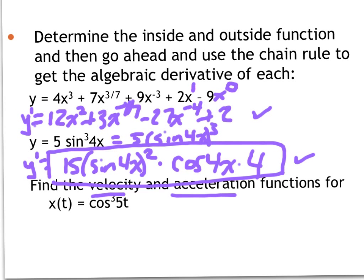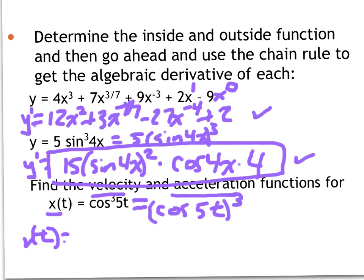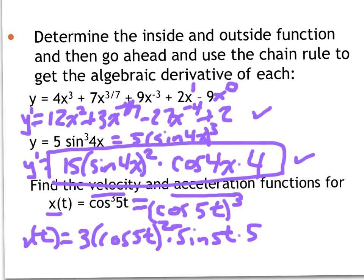The next problem is to remind you how to find velocity and acceleration for a given function. x of t is a distance function, so velocity and acceleration are found by taking the first and second derivatives. There's that exponent on the inside again, so rewrite it as cosine(5t) the whole thing to the third power. Find velocity using the chain rule: derive the outside — 3 times cosine(5t) — drop the exponent by 1, times the derivative of the inside, which is negative sine(5t) times 5. For acceleration we'd need to derive this again, but since that involves a multiplication problem, we'll need a different rule and will come back to it later.